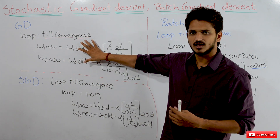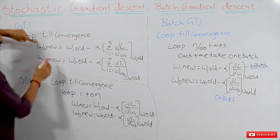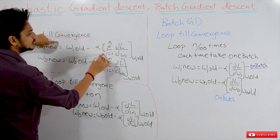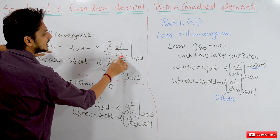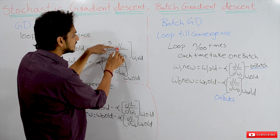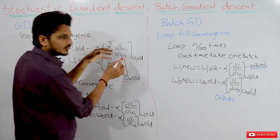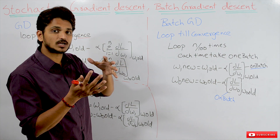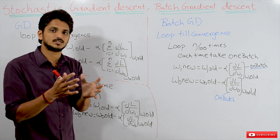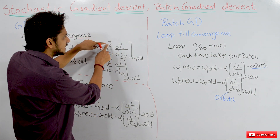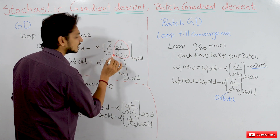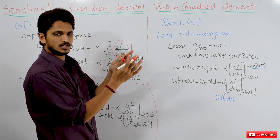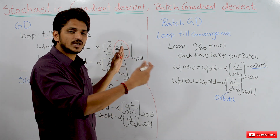So what we discussed in our last class is in linear regression, we used this equation: w1_new is equal to w1_old minus alpha into sigma i equals 1 to n, dou L by dou w1. L here is our loss function. We are differentiating the loss function with respect to w1 and computing the sigma from i equals 1 to n, where n is the number of data points — we considered 4 data points in our last class. We substitute each data point in the derivative equation and sum them up.